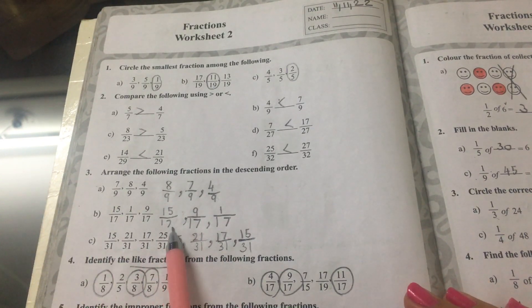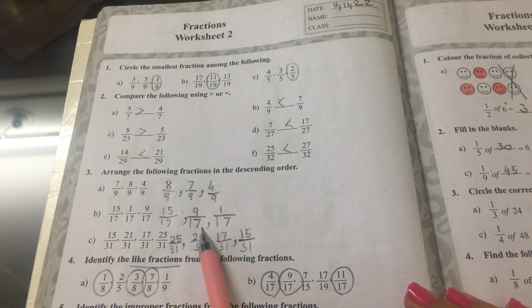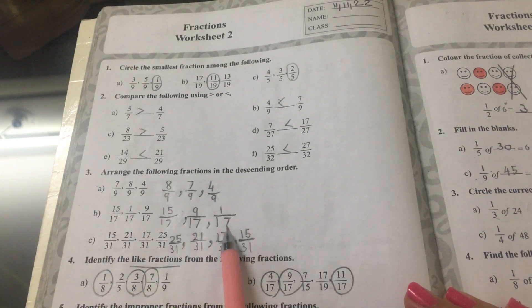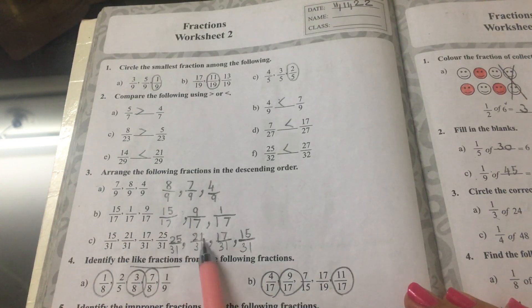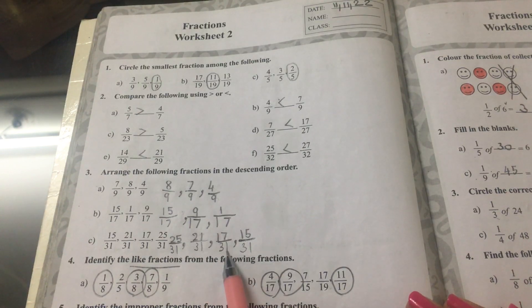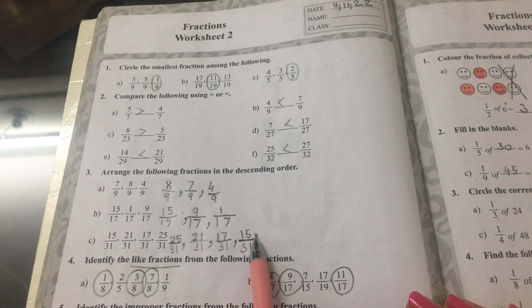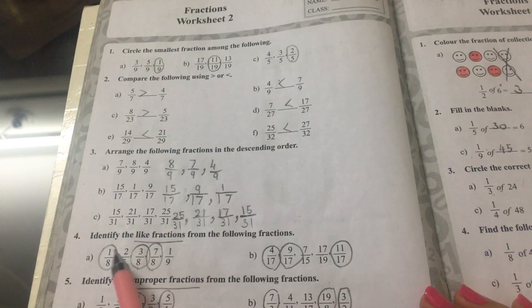B, 15 seventeenths, 11 seventeenths, and 9 seventeenths. And C, 25 thirty-firsts, 21 thirty-firsts, 17 thirty-firsts, 15 thirty-firsts.